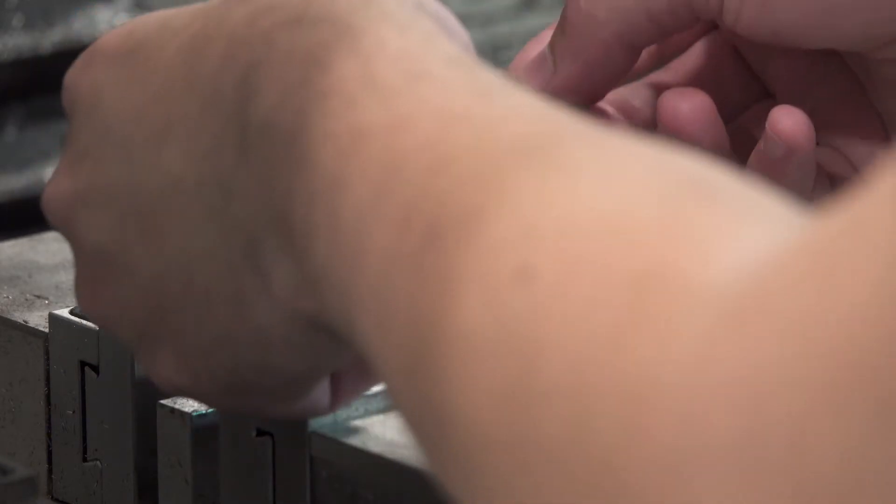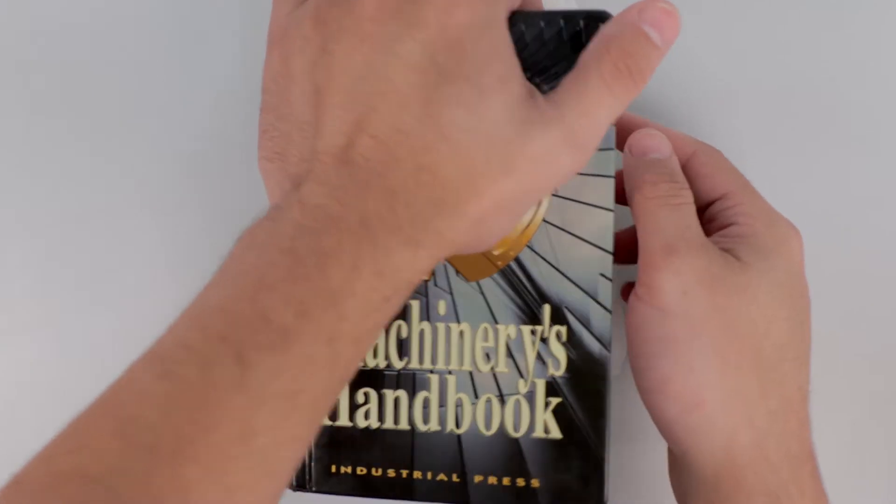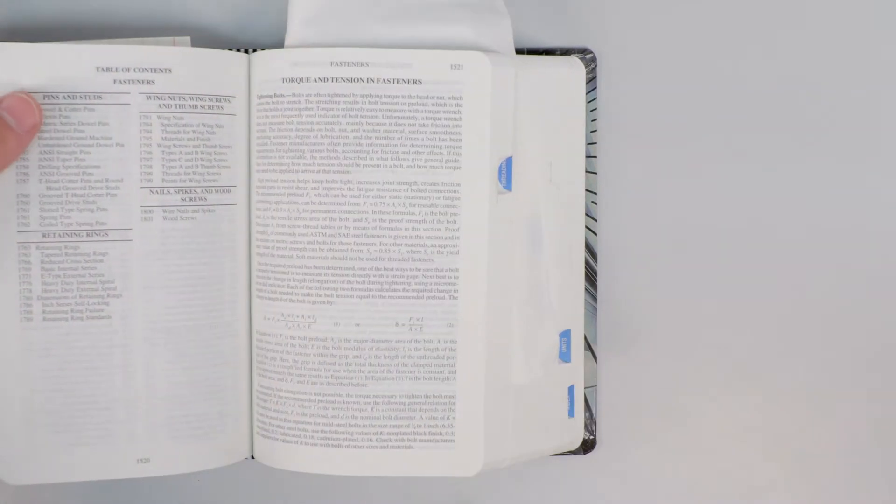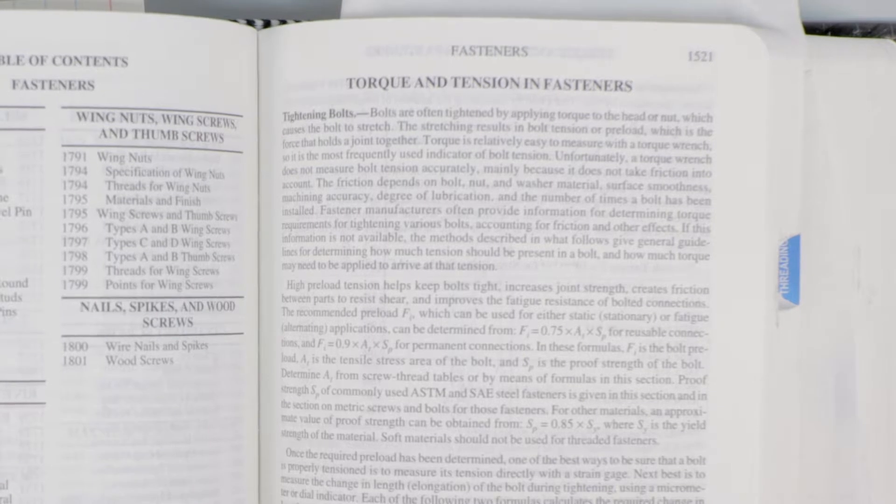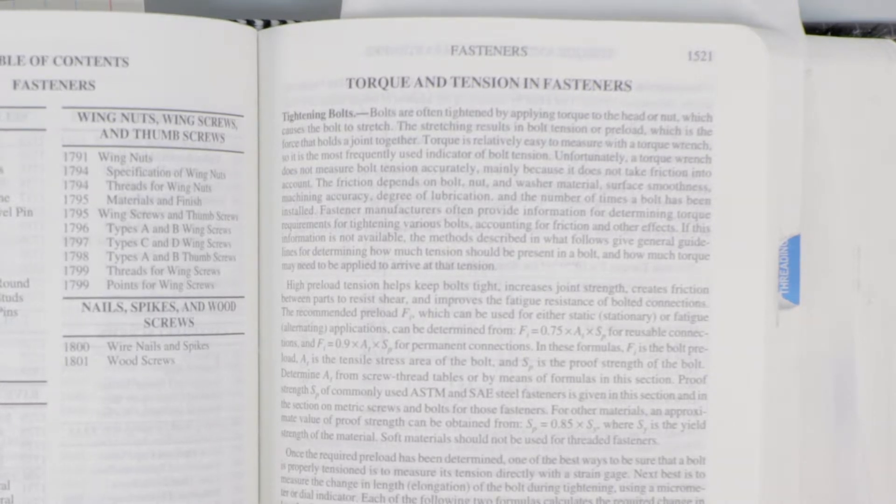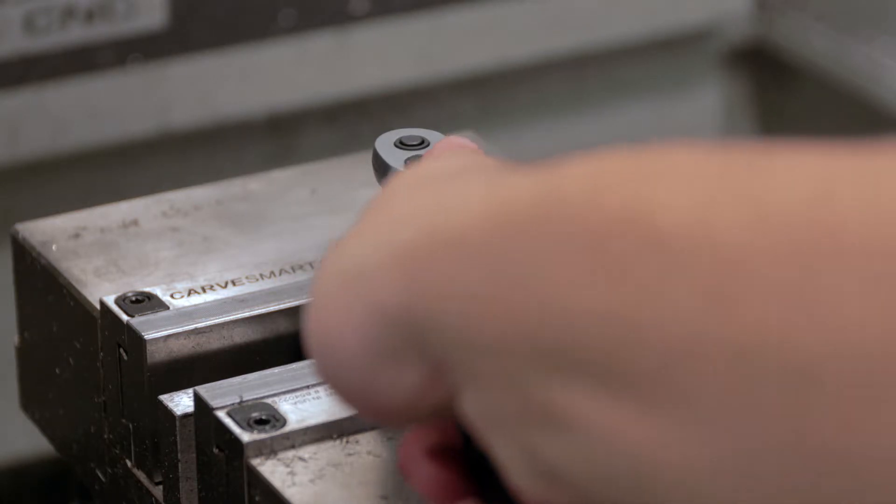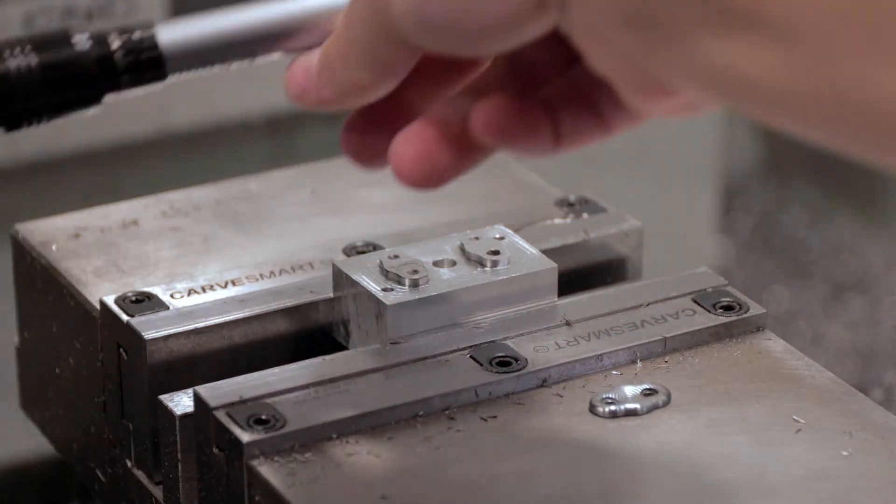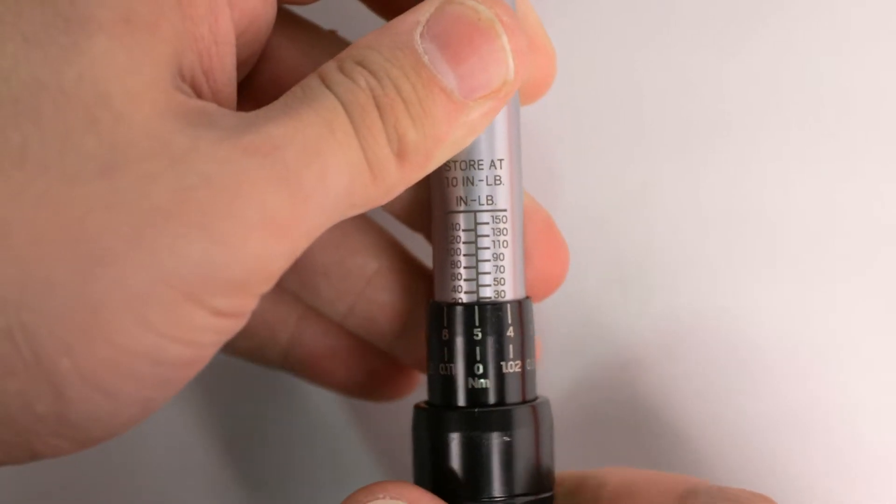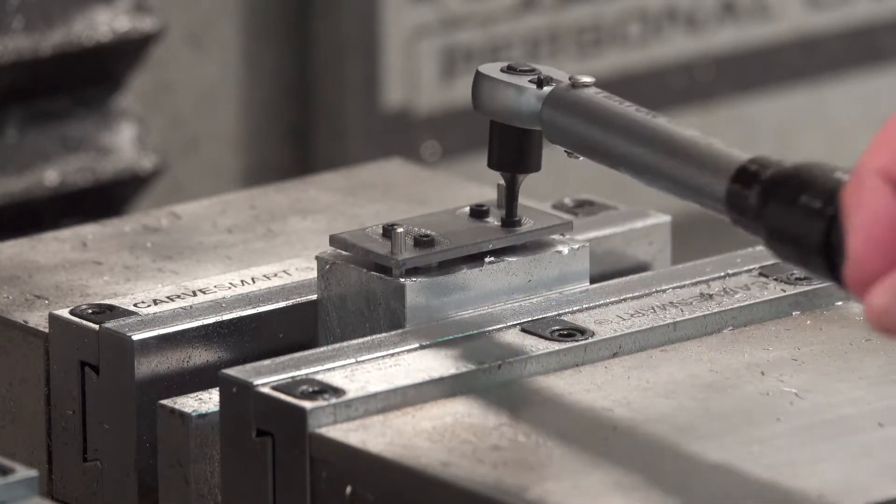Looking up torque online gave me unsatisfying answers. Machinery's Handbook says that torque wrenches aren't totally accurate because proper torque depends on the coefficient of friction of the materials and what oil, if any, is lubricating the threads. So I just decided to do a test myself. I measured how much force it would take to break a screw using the fixture I messed up. 25 inch pounds. 15 inch pounds seemed like a good number to play it safe.